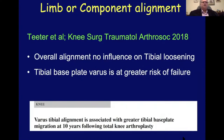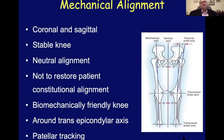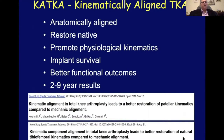Regarding limb versus component alignment, a paper from 2018 by Teeter et al. showed that overall alignment has no influence on tibial loosening, but if the tibial base plate is in varus, there is a greater risk of failure. Mechanical alignment, which we have done for years, needs to be achieved in both the coronal and sagittal plane to give a stable knee with neutral alignment — it is more biomechanically friendly around the trans-epicondylar axis and overall patellar tracking seems to be better. Kinematically aligned total knee replacement restores the native knee and promotes physiological kinematics. Implant survival data goes up to only two to nine years, but there are better functional outcomes reported.